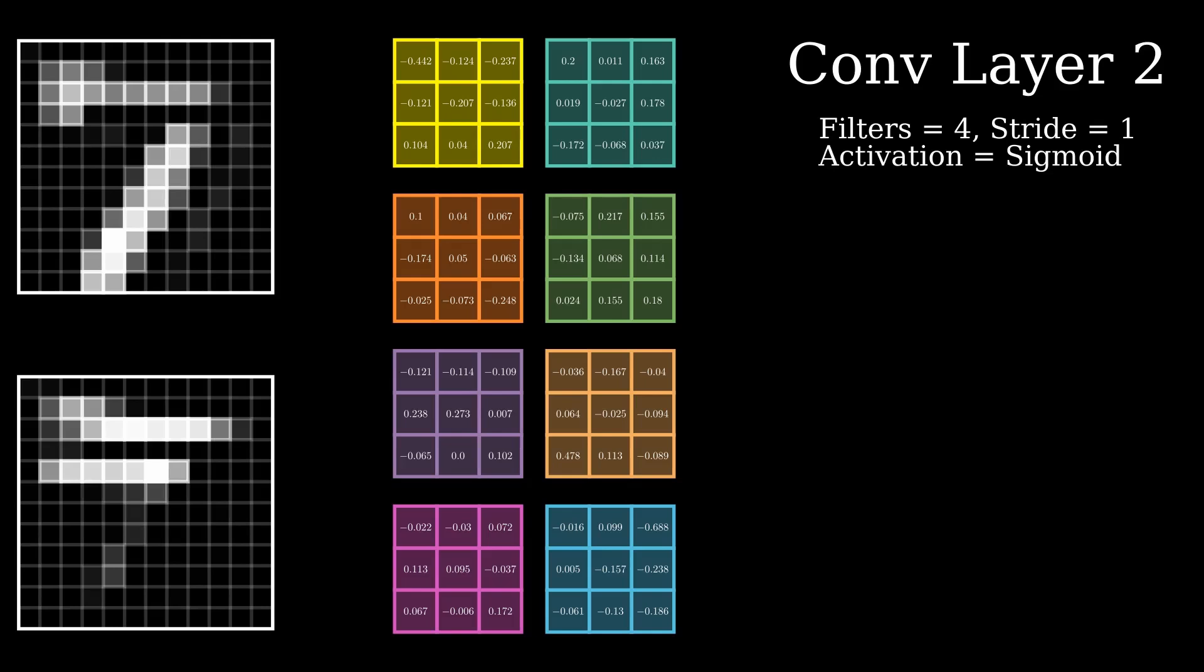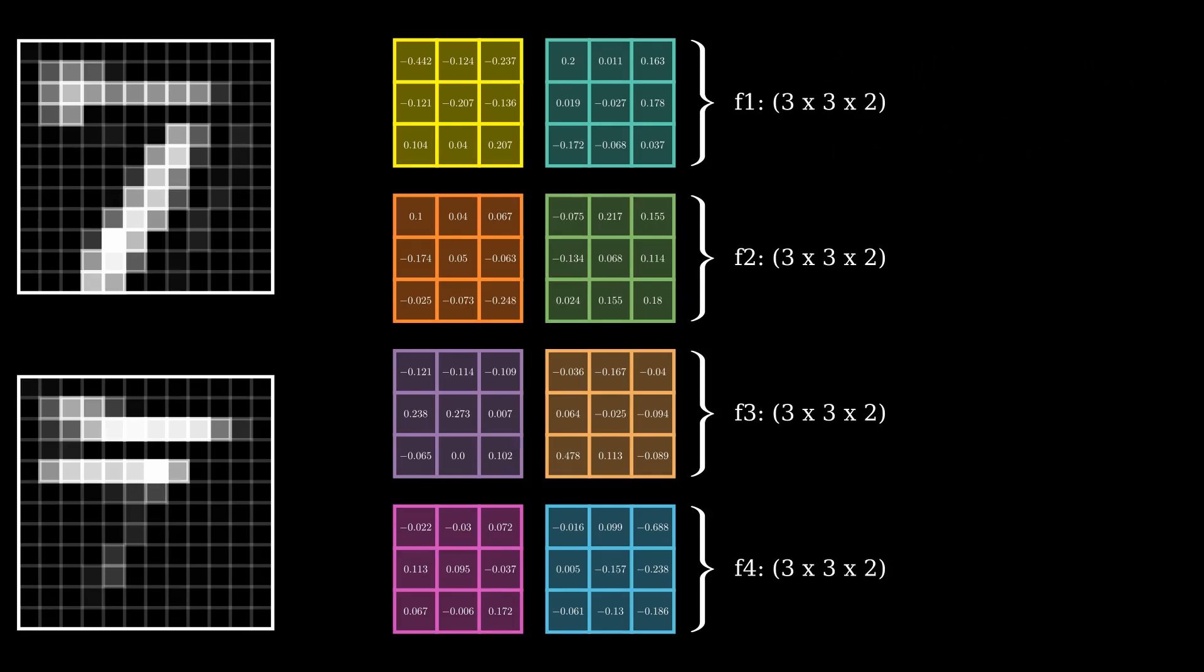So, what's going on? Well, there are 4 filters with the dimensions 3x3x2. Since we have 2 channels from the previous activations, we'll have 2 channels in each filter.